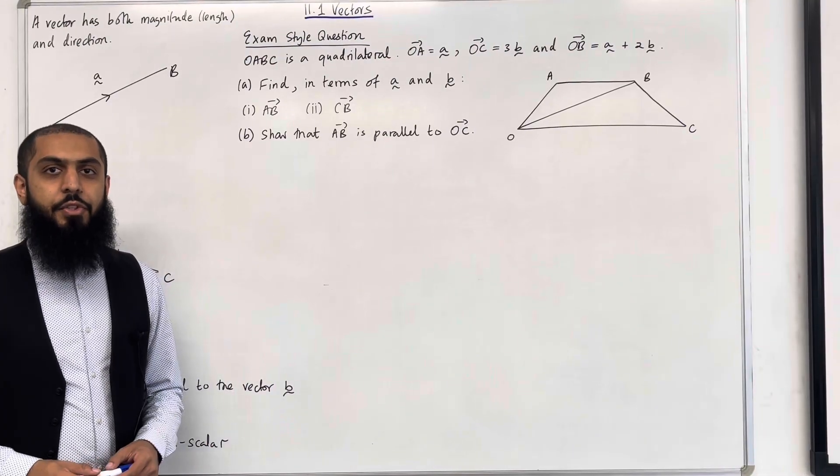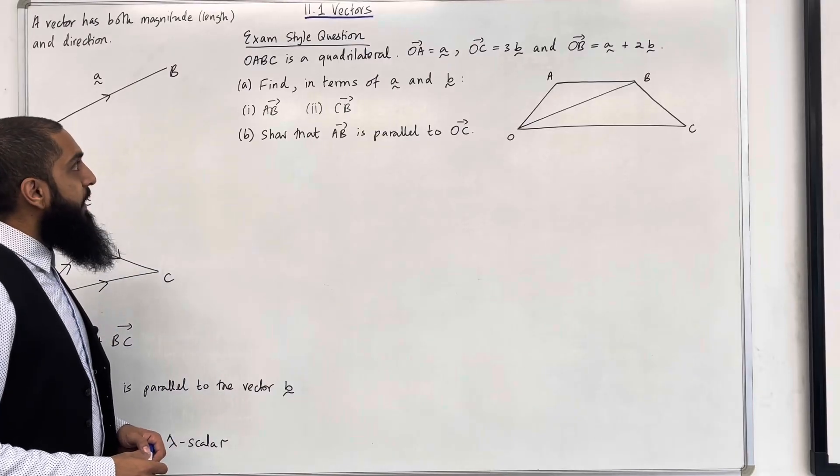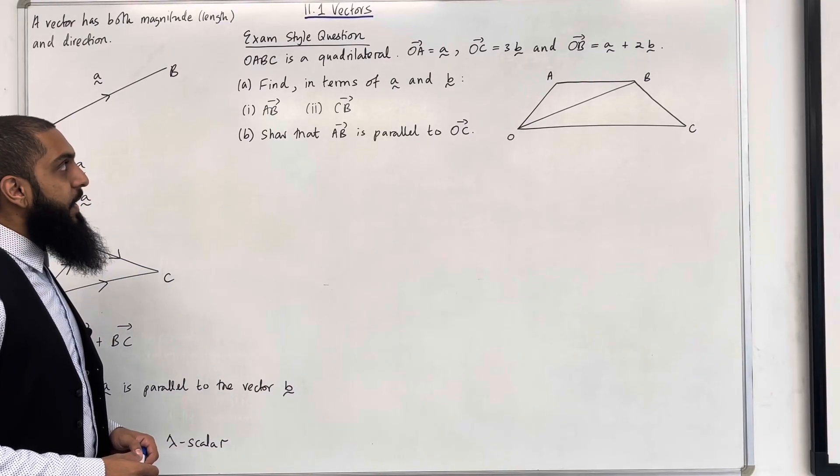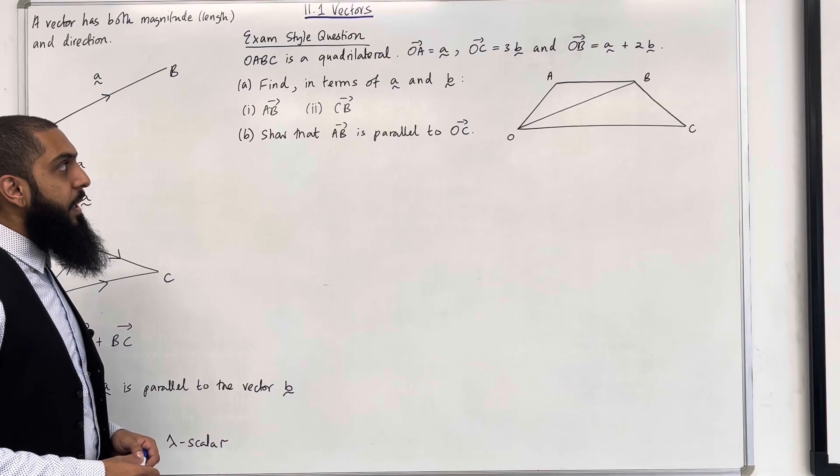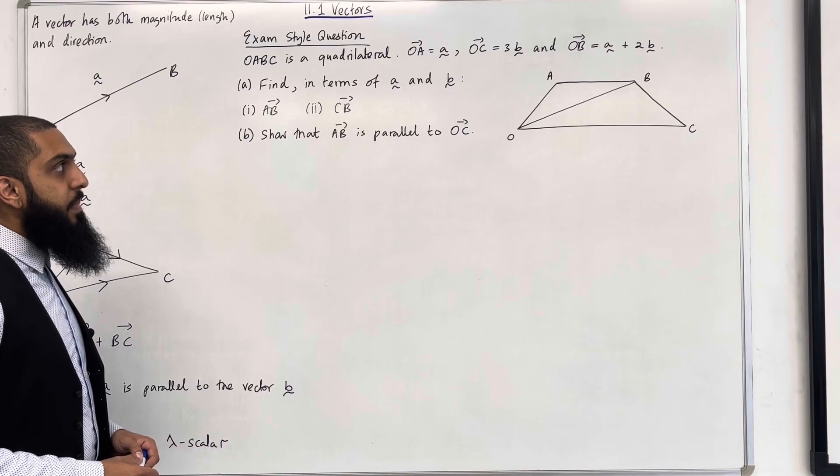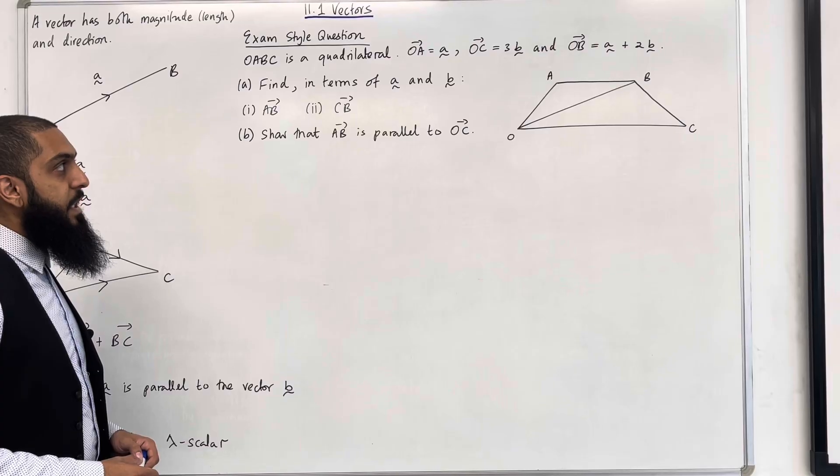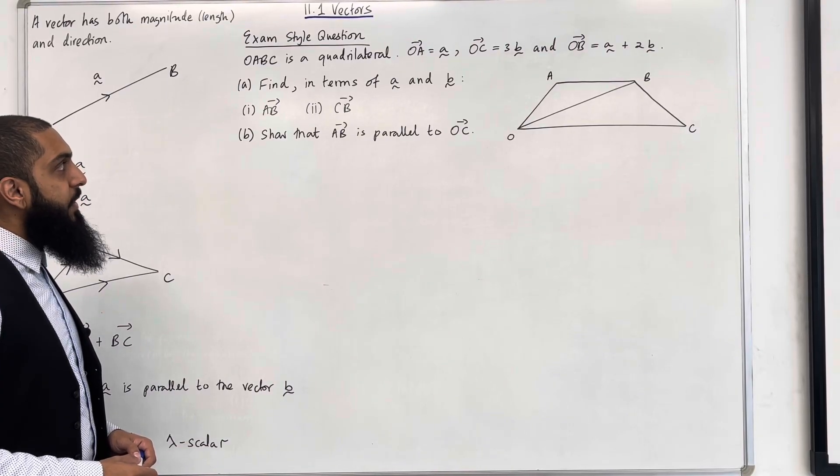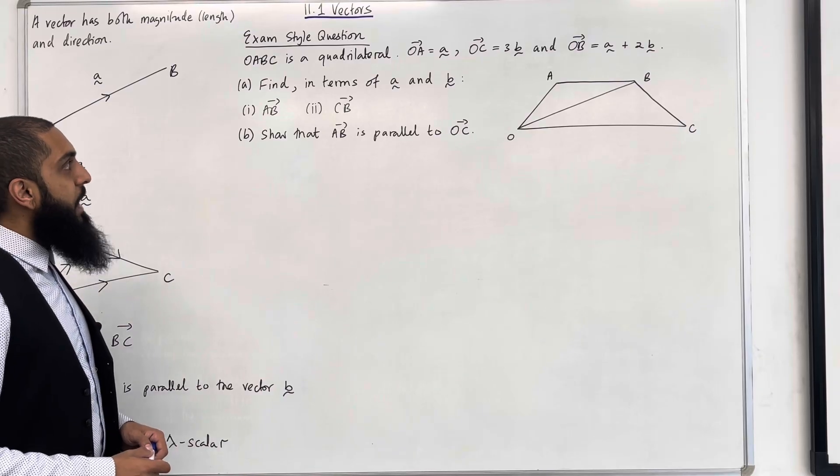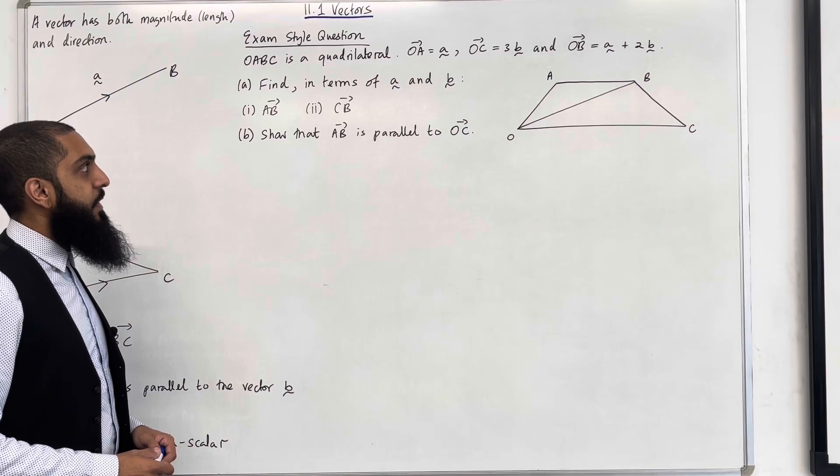Let's have a look at the exam style question. O, A, B, C is a quadrilateral. The vector O to A is given by A squiggle. The vector O to C is given by 3B squiggle. And the vector O to B is given by A squiggle plus 2B squiggle. Part A, find in terms of A squiggle and B squiggle, part 1, the vector A to B, and part 2, the vector C to B.